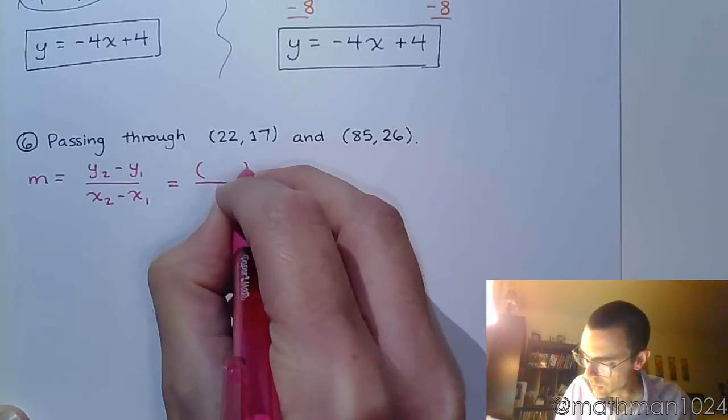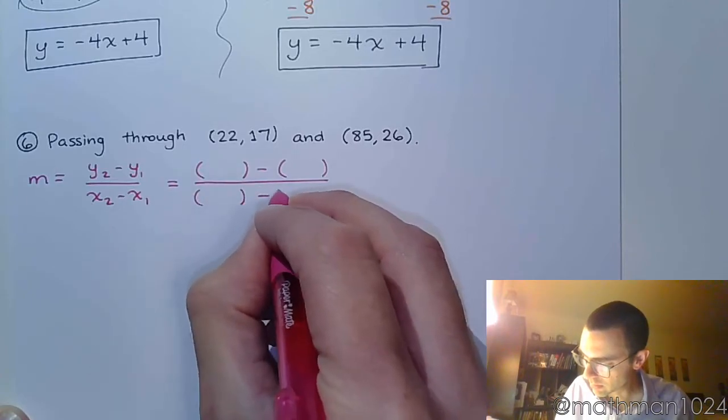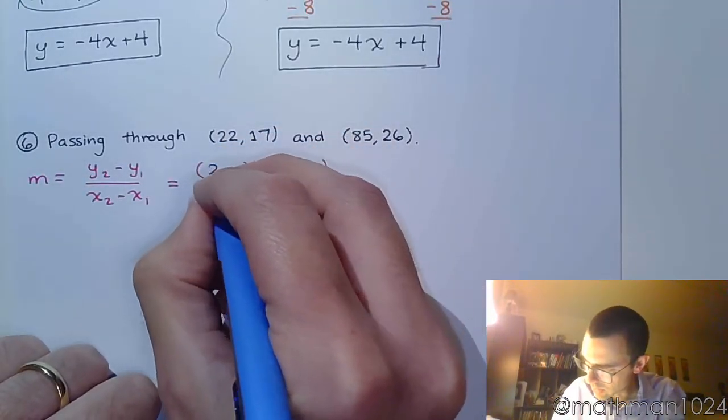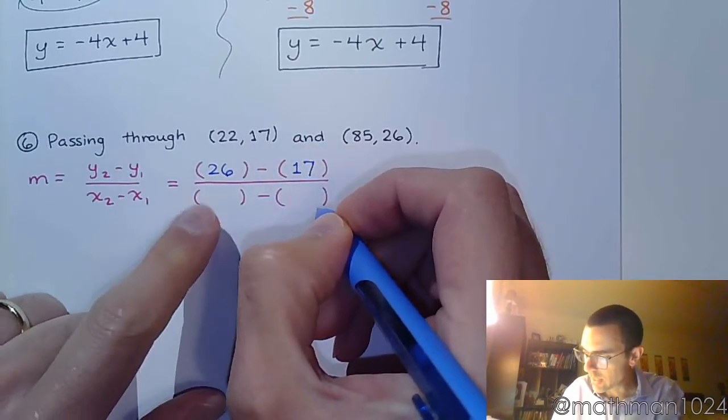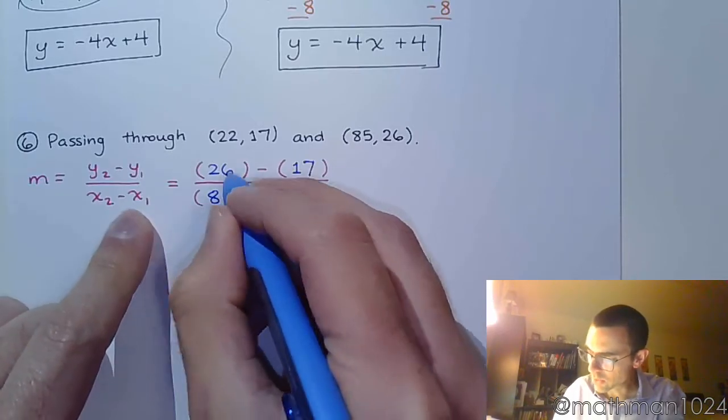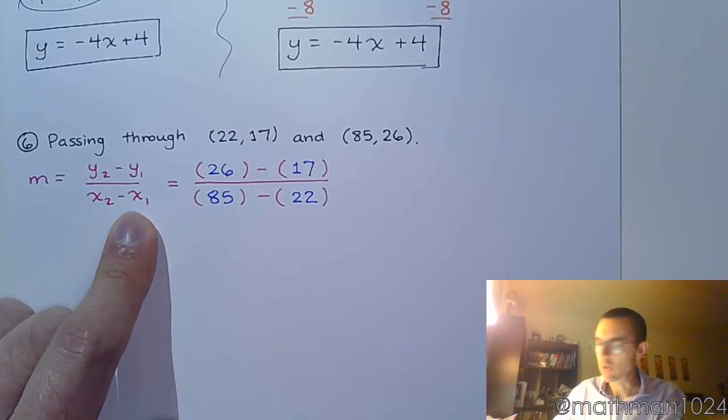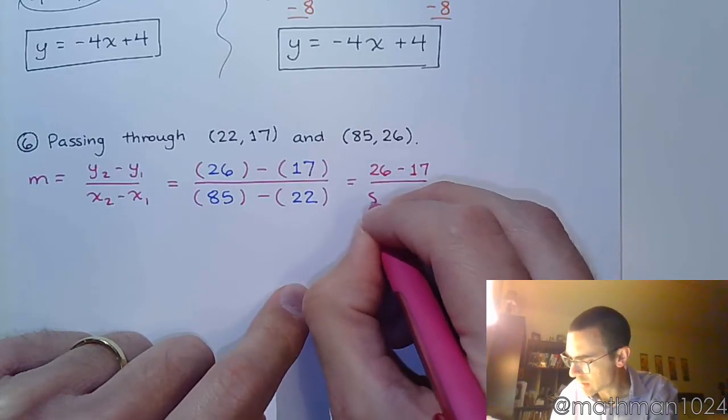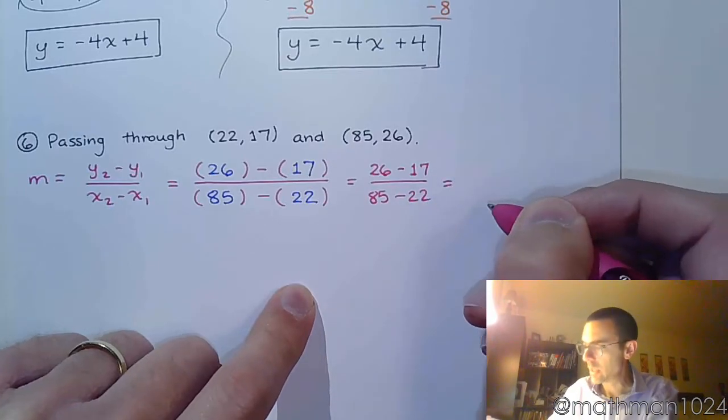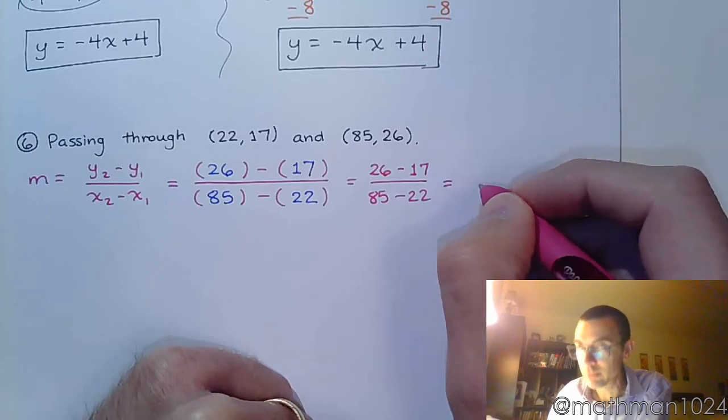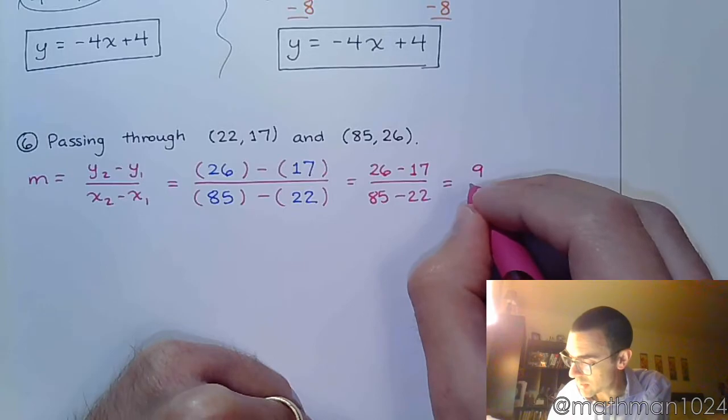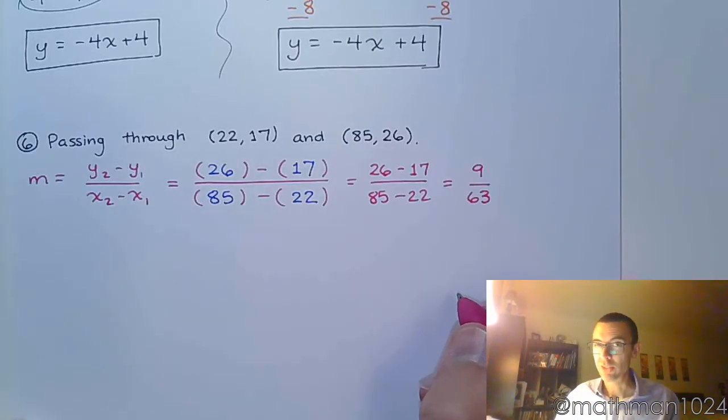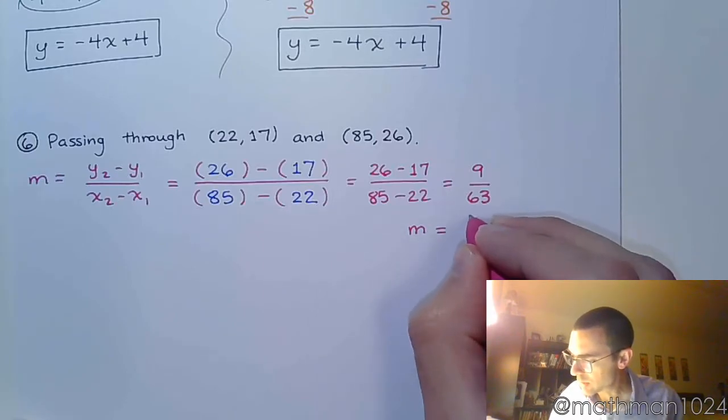So, let's use those parentheses correctly. So y2 is going to be this guy, that's 26. y1 is 17. And then x2 is 85. And x1 is 22. Let's see what we get here. So, without the parentheses, this is just 26 minus 17 over 85 minus 22. Cleaning this up, 26 minus 17 is 9. And 85 minus 22 is 63. This does not look like fun, but we can simplify this. And we can find out that our slope is going to be 1 over 7 when you reduce that.